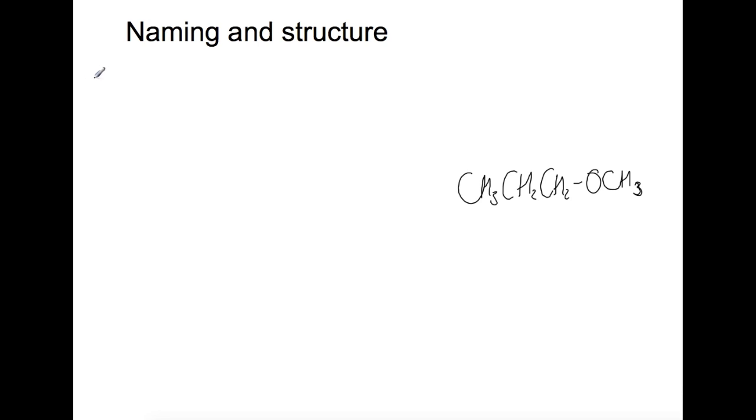Ethers are isomeric with alcohols but they do not have the hydroxyl functional group. Their general structure is that of a carbon chain joined to an oxygen which is joined to a second carbon chain. The two carbon chains may be identical but this is not always the case.